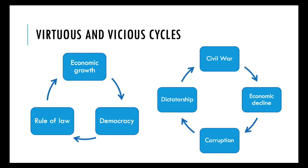This is particularly difficult in comparative politics because so many countries get caught in what we call virtuous or vicious cycles. We usually see what are called development clusters. A country will be rich, democratic, and stable, or poor, authoritarian, and conflict-prone. If all good or bad things go together, how do we figure out which one actually came first?